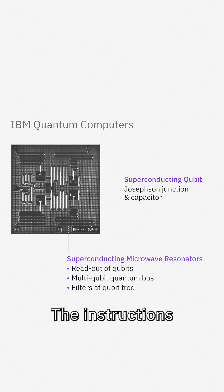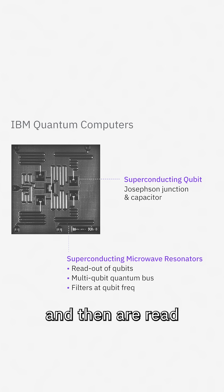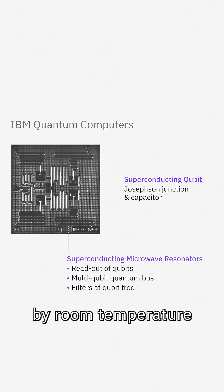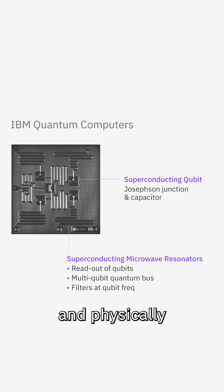The instructions for the microwave pulse go from your computer to the cloud and then are read and interpreted by room temperature control electronics, which take those instructions and physically generate the pulses.